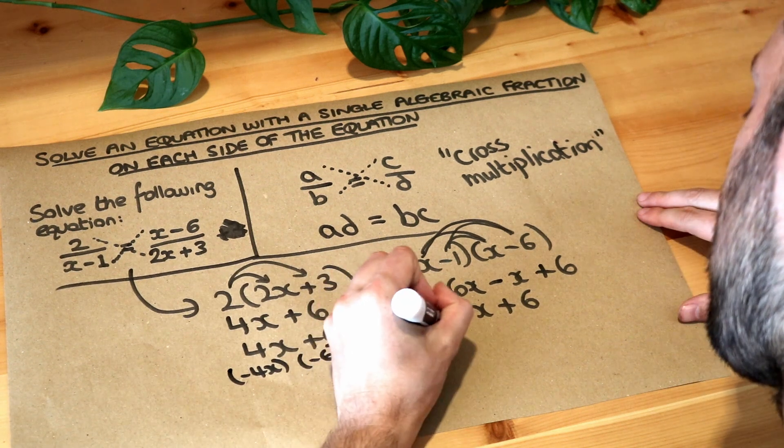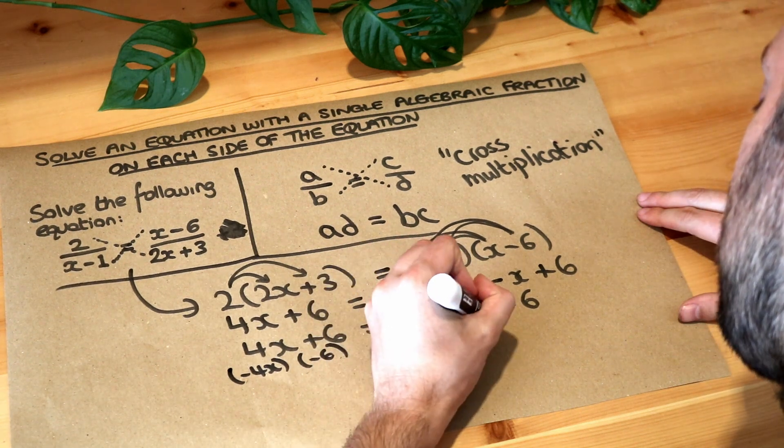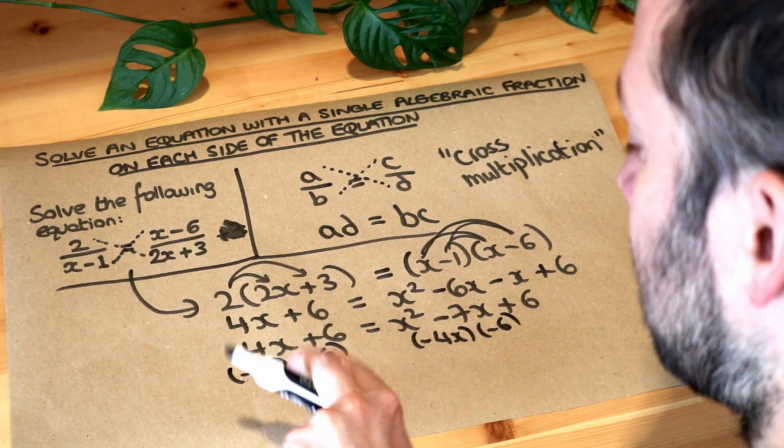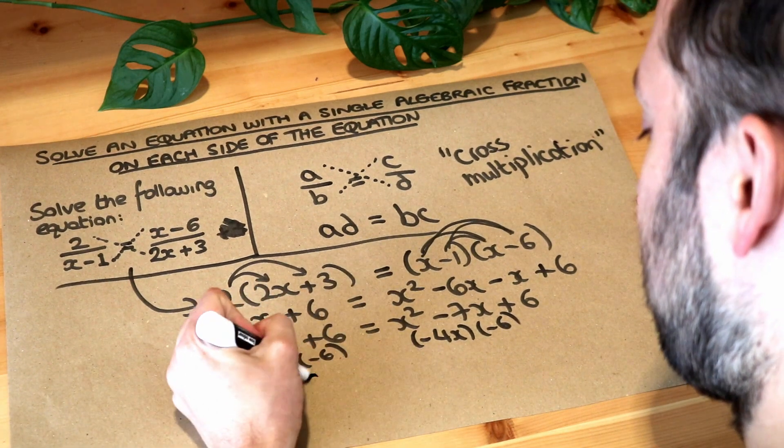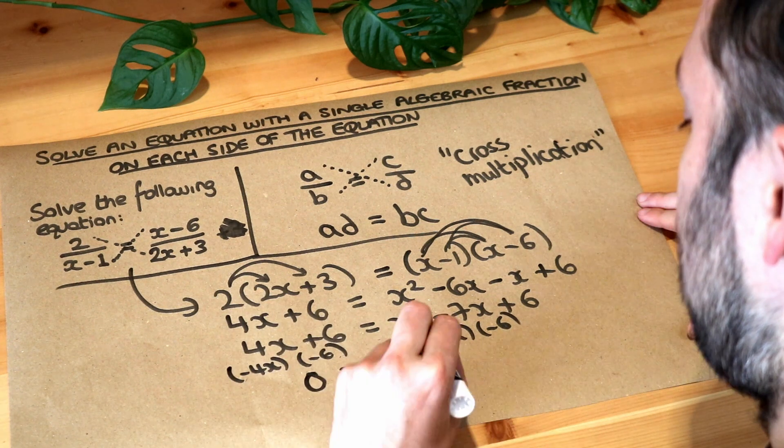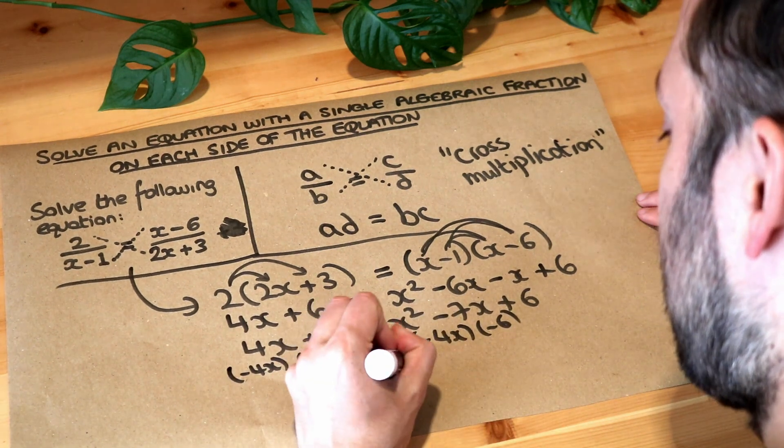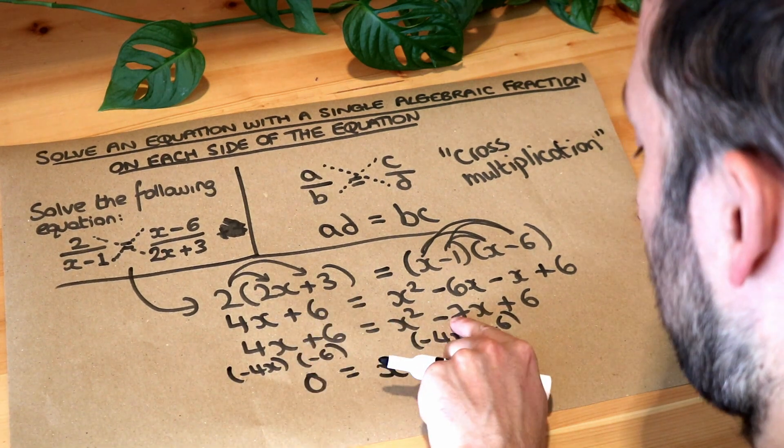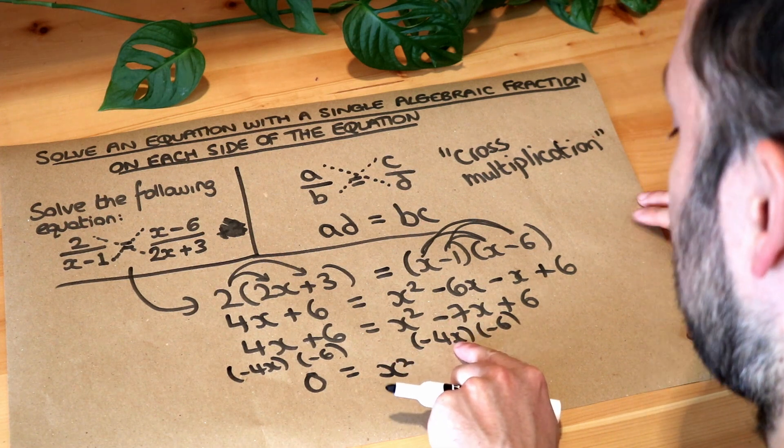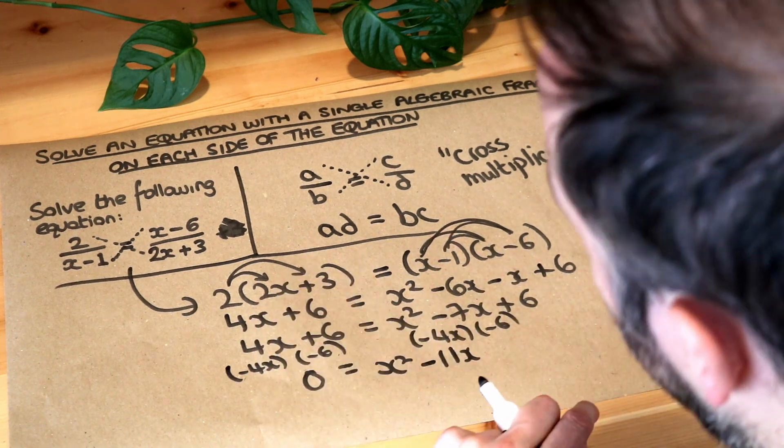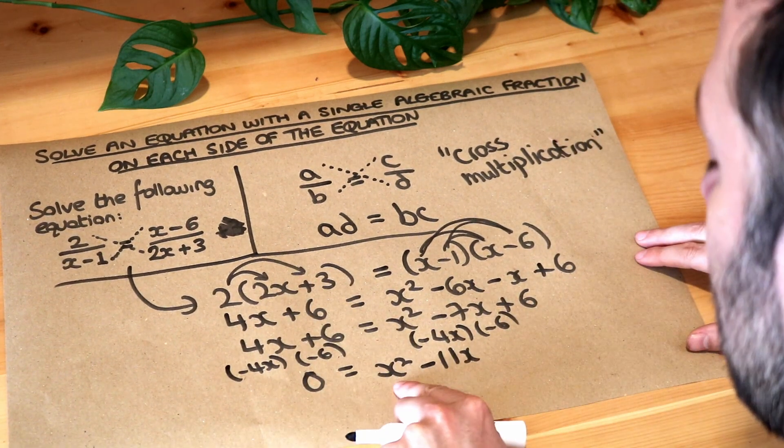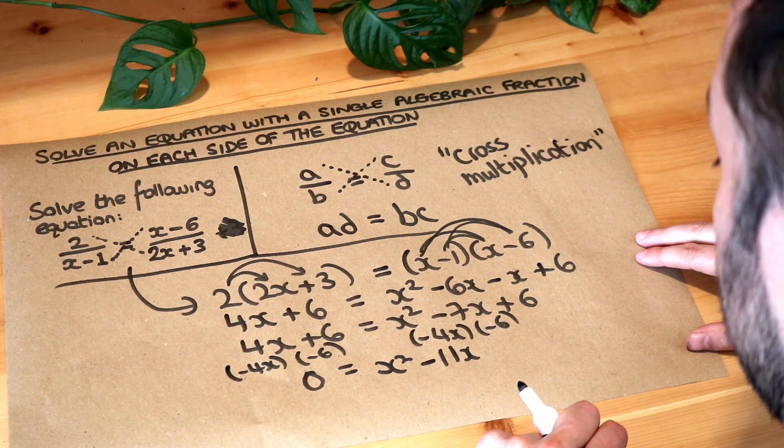I can do that all in one go if I want, so minus 4x and I'm going to minus 6 from both sides. So if I do that, minus 4x gets rid of that, minus 6 gets rid of that, you're just left with 0. I've still got this x squared here. If I subtract the 4x I've got minus 7x, subtract another 4x that's going to be minus 11x, and the 6 minus 6 just cancels. So I'm left with x squared minus 11x equals 0.